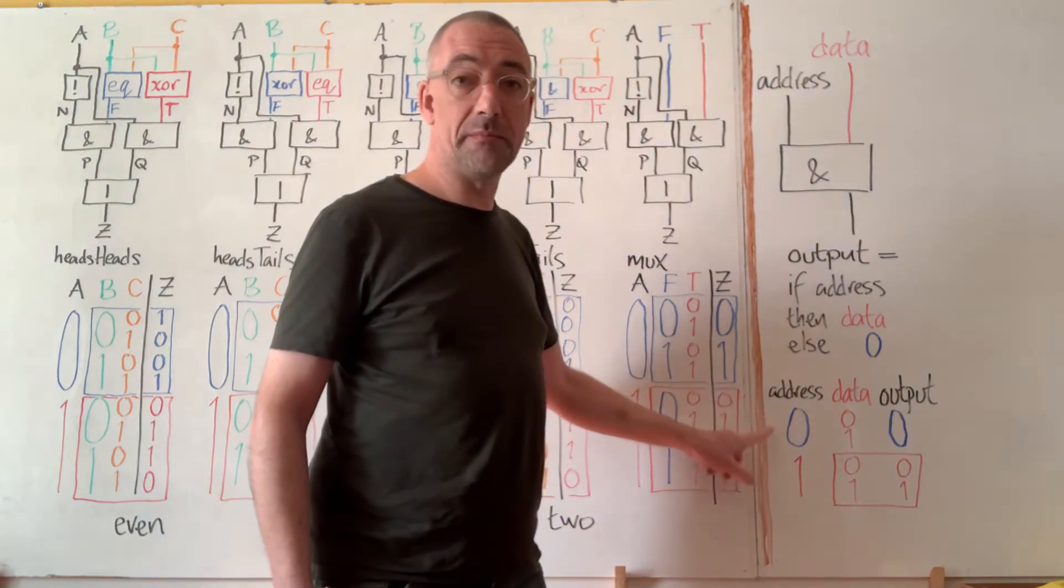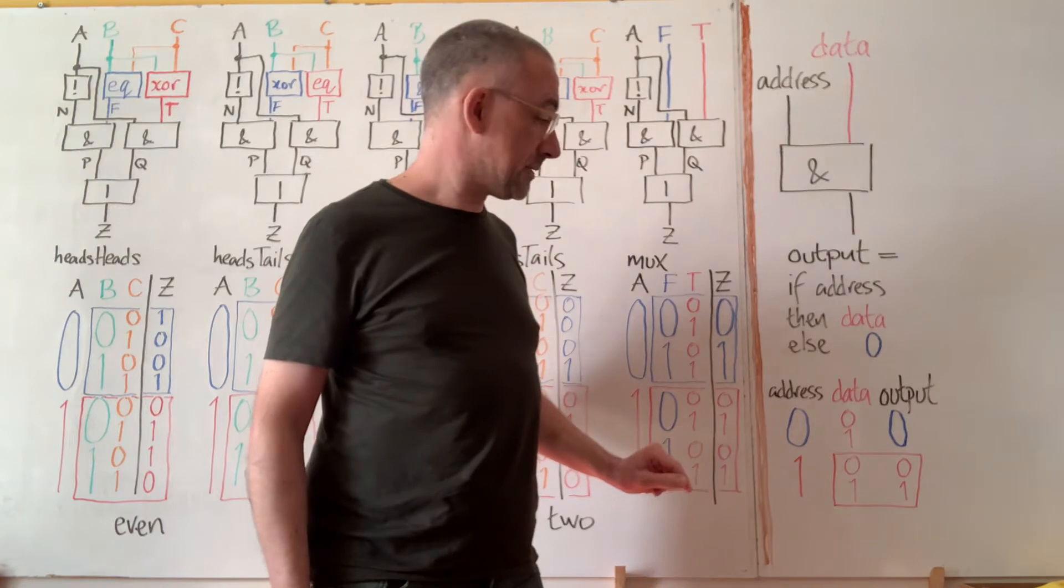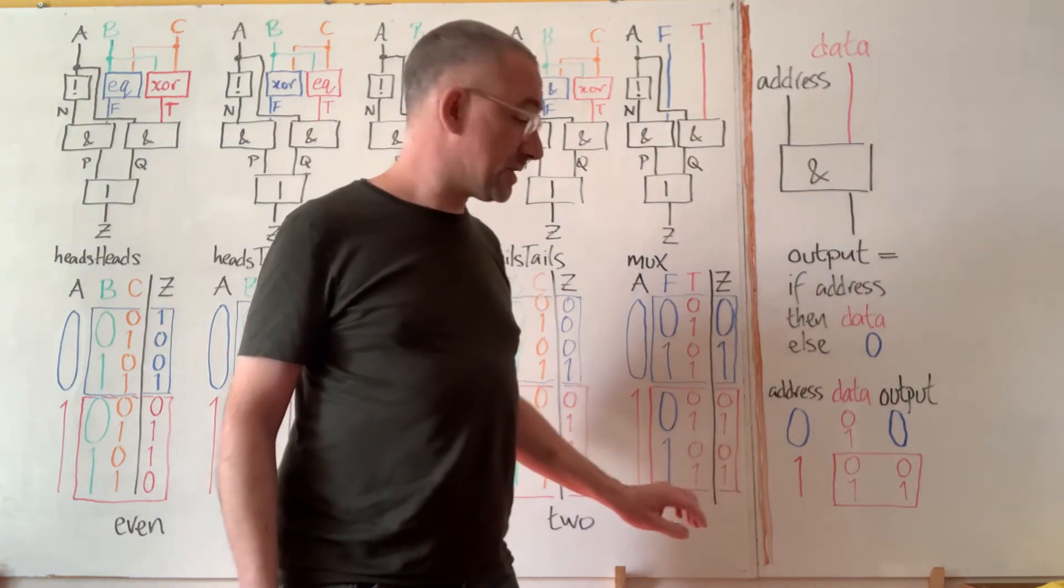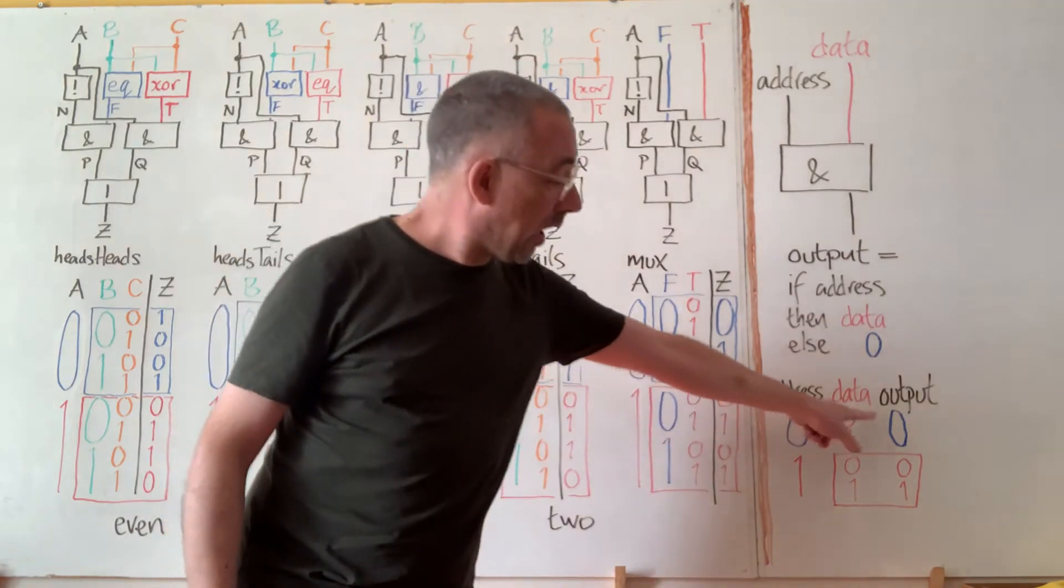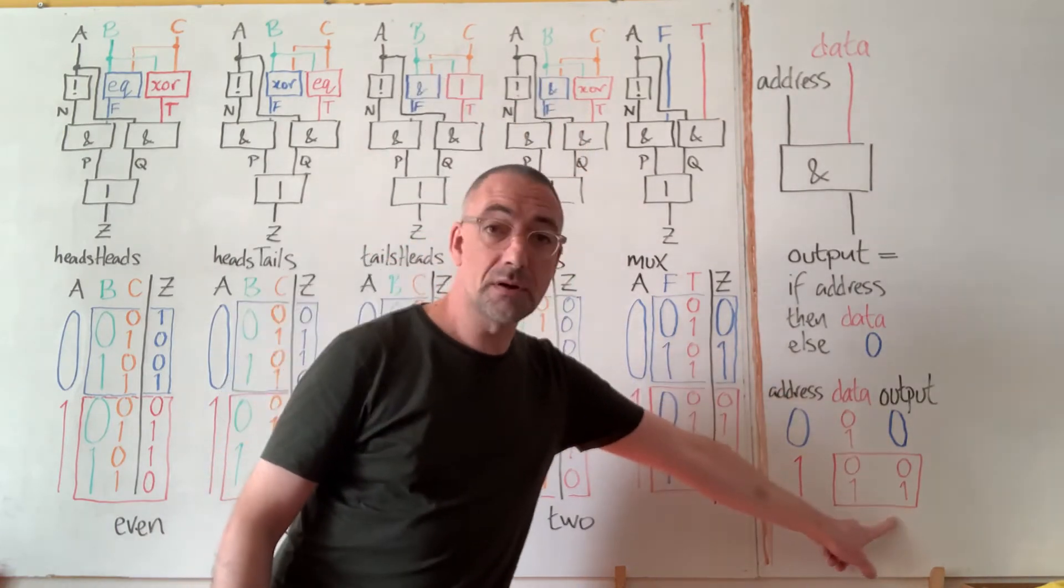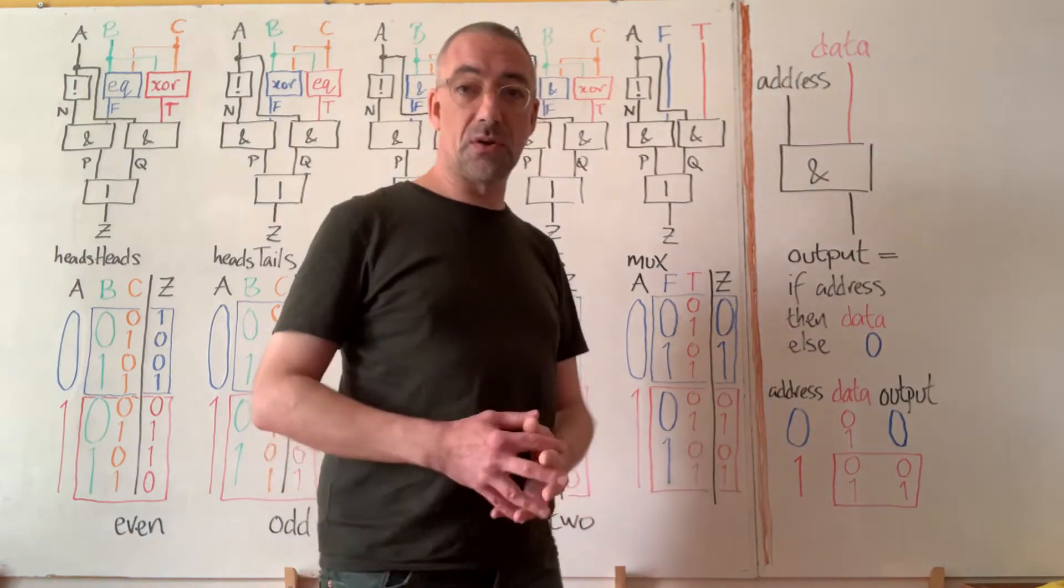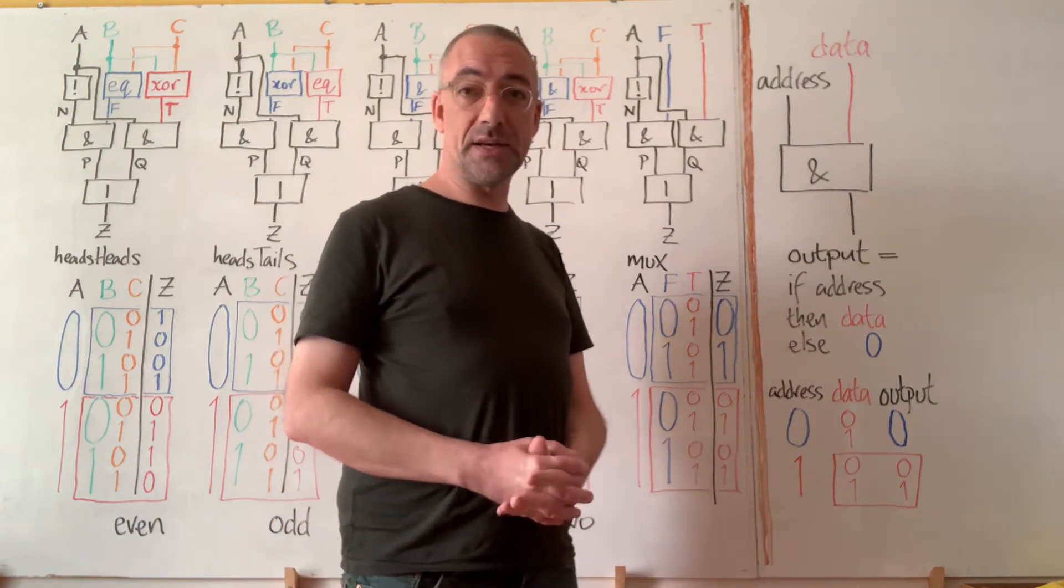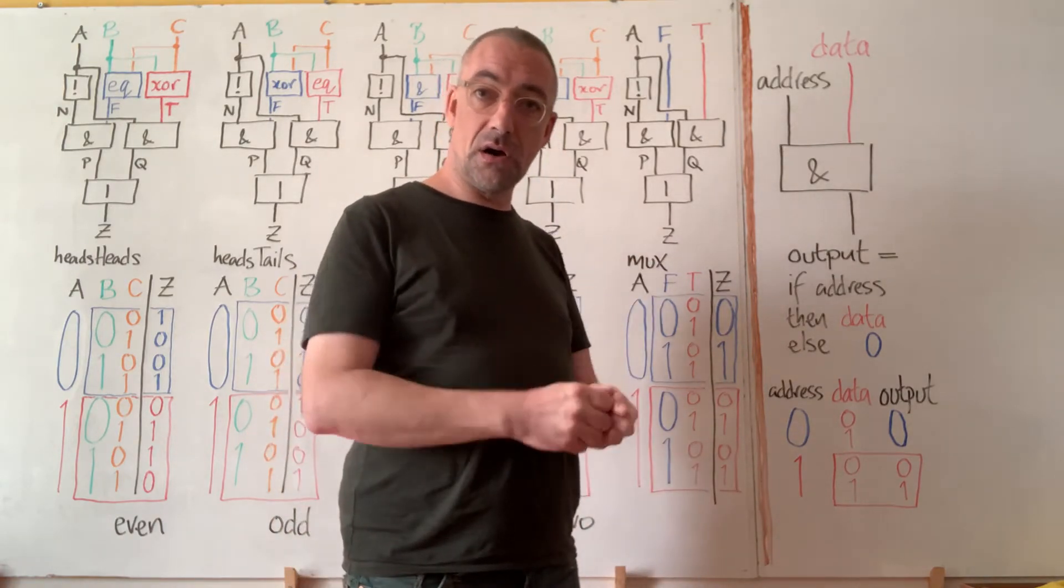And let's look. This is the familiar truth table for AND but colored in more suggestively. If the address is zero, out comes zero. If the address is one, out comes the data. So this is the way we can switch a data flow on and off.